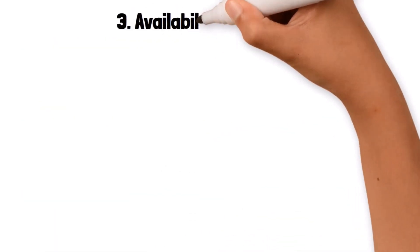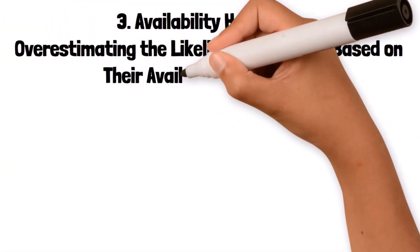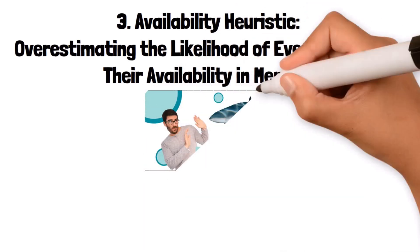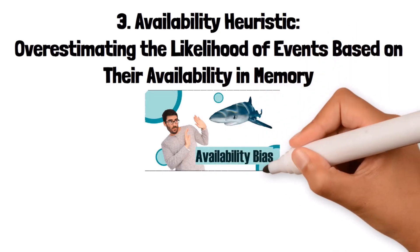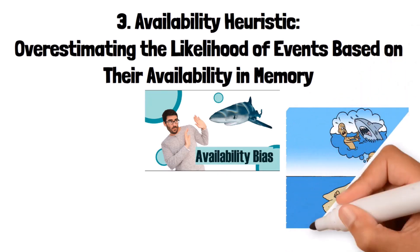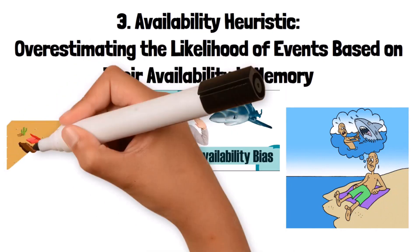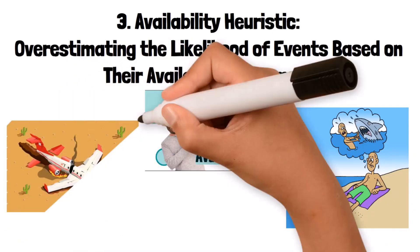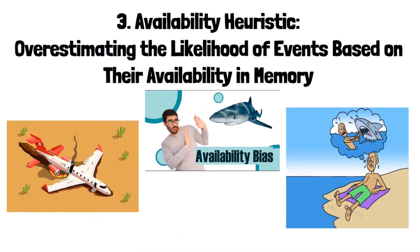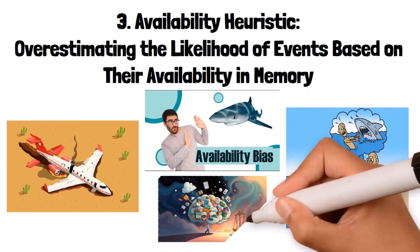3. Availability Heuristic: overestimating the likelihood of events based on their availability in memory. The availability heuristic is a mental shortcut where people judge the probability of events based on how easily examples come to mind. If something can be recalled easily, people assume it is more common or likely to happen. For example, after hearing about a plane crash on the news, a person might overestimate the risk of flying, even though statistically air travel is very safe. The vividness and recentness of information make it more accessible, leading to biased judgments.